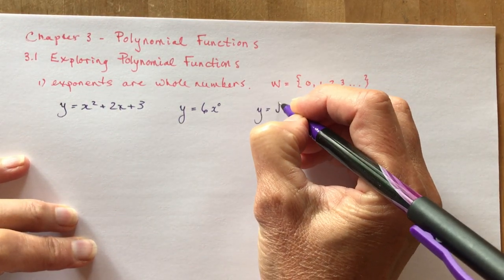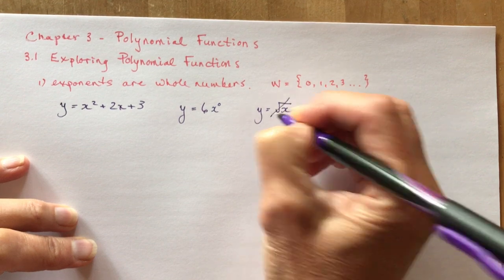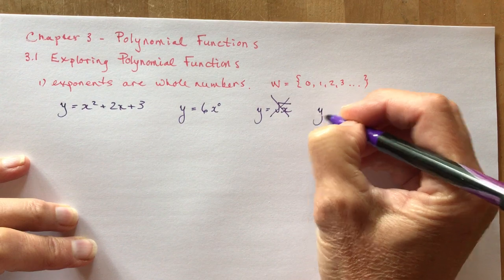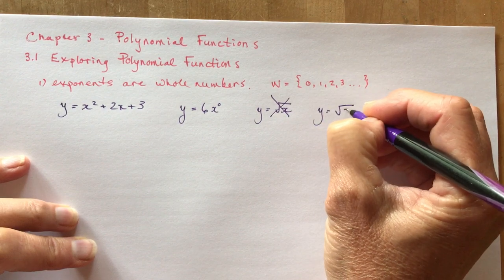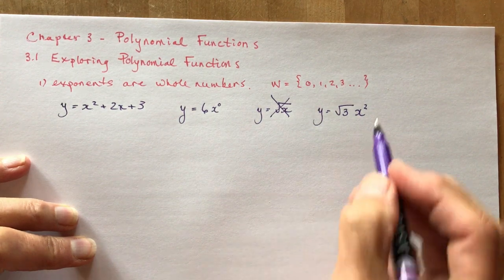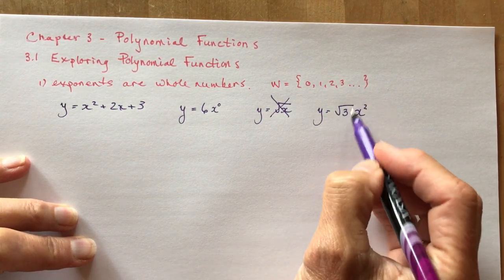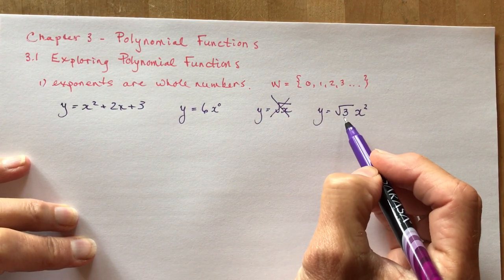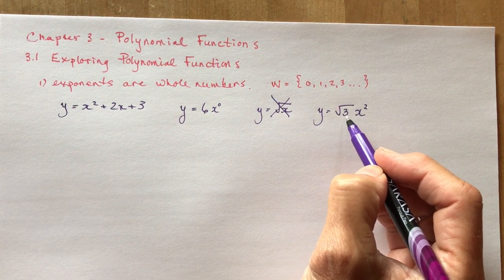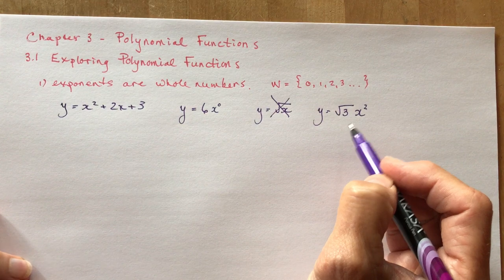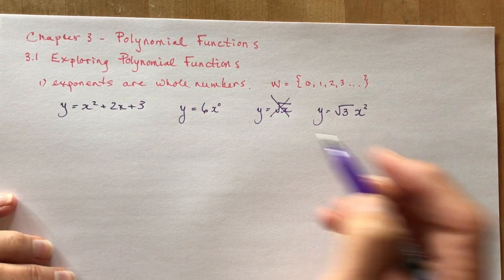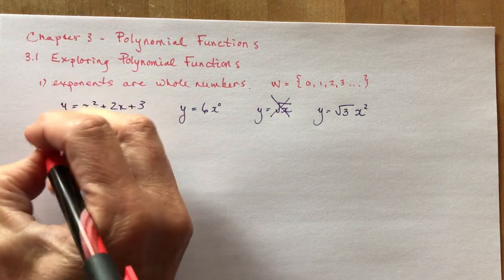If I said y equals the square root of x, you'd say no, because it has a power of 1 half. But I could have something like this, so not to be confused. They could trick you. You'll see, oh, there's a rational, but it's only the number that's a radical number. Only the radical's on the coefficient. That's okay, because the degree of the polynomial function here would be 2. That's the first thing you need to know. The exponents are whole numbers.